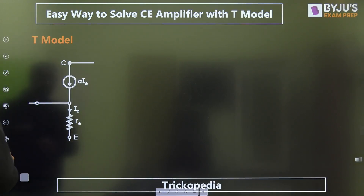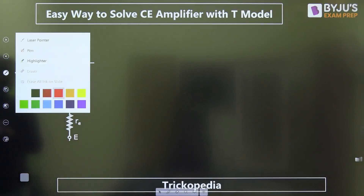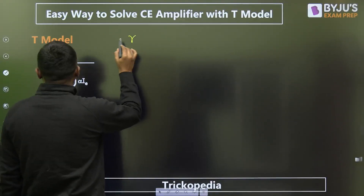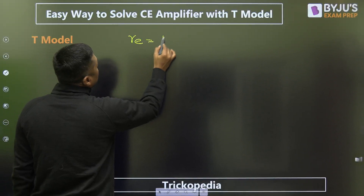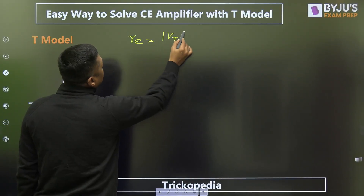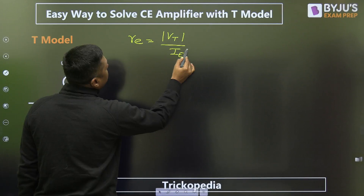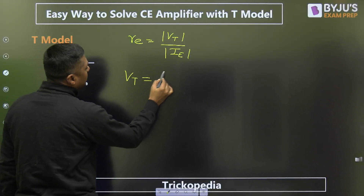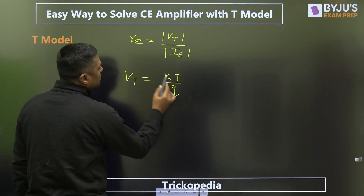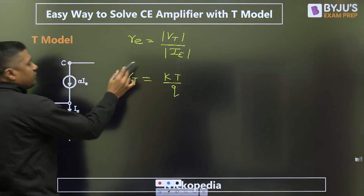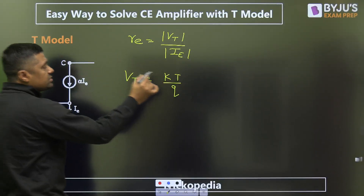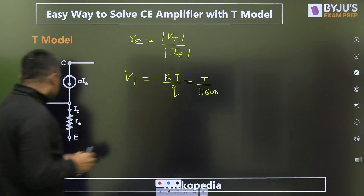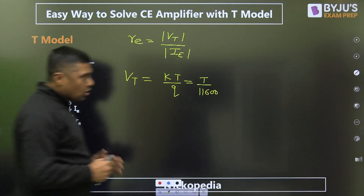How we can calculate the RE? This RE is known as emitter resistance, given by VT upon IE. VT is the volt equivalent of temperature, given by KT by Q, where K is the Boltzmann constant, T is the temperature, and Q is the charge — equal to T by 11600. This RE and alpha together form the T model.